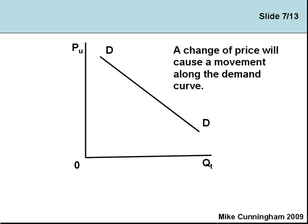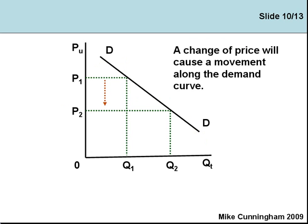A change in the price will cause a movement along this demand curve. So if we change the price it will cause a movement along the curve. Let's say a price of P1 and a quantity demanded per unit of time of Q1. Now if the price falls to P2, the quantity demanded may increase to Q2. As the price has fallen, we have moved along the curve — from one point on the curve to the next. A change in price causes a movement along the curve.